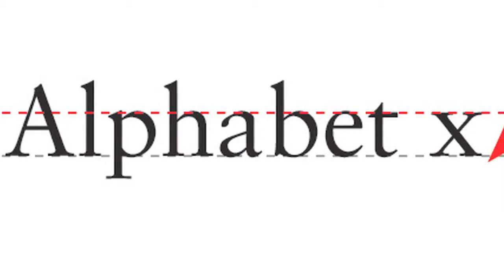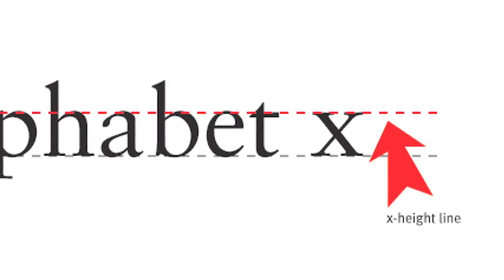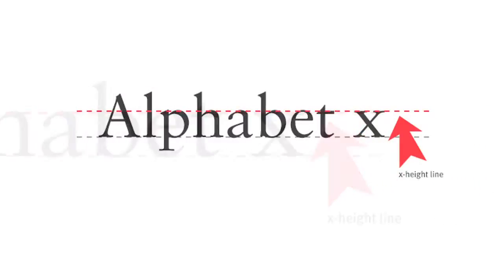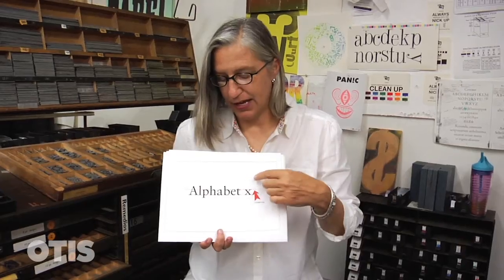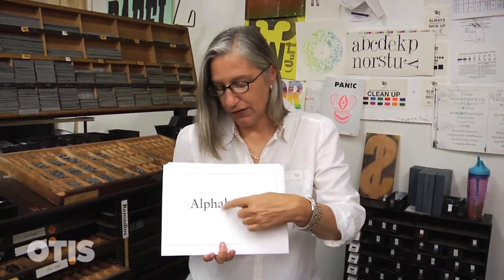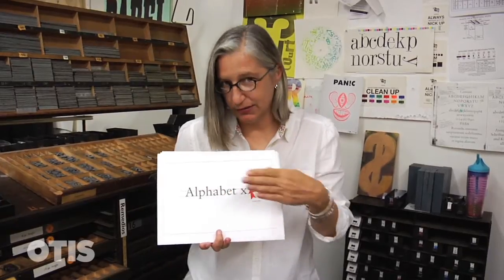Another important line is the X height line. It's called an X height line because it goes across the lowercase letters. X is the only one that's flat at the top and the bottom, and the line is easier to draw. Every other letter has something either sticking up or going down, and X is flat on top and flat on bottom — X height line.